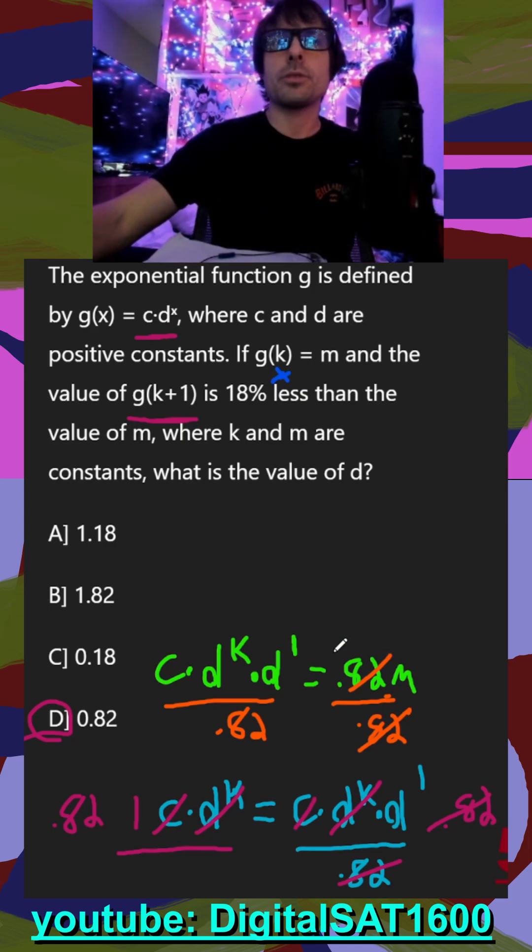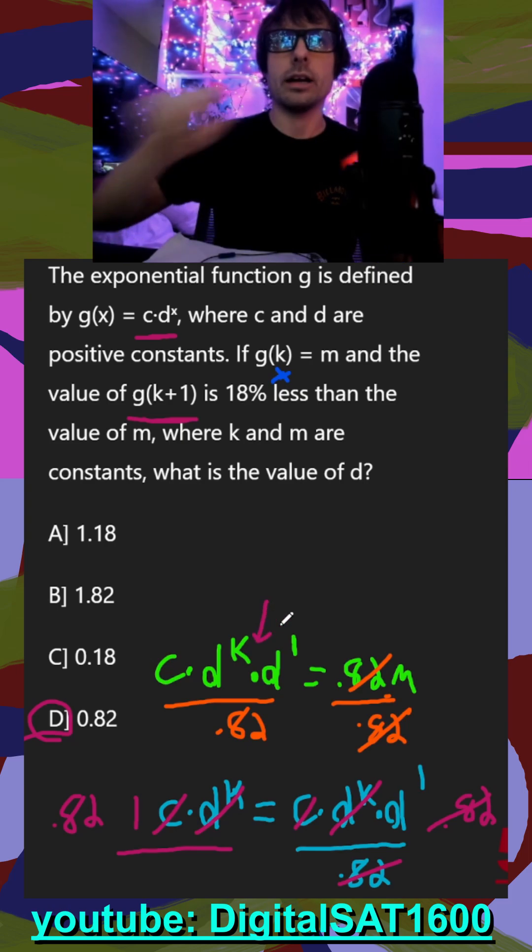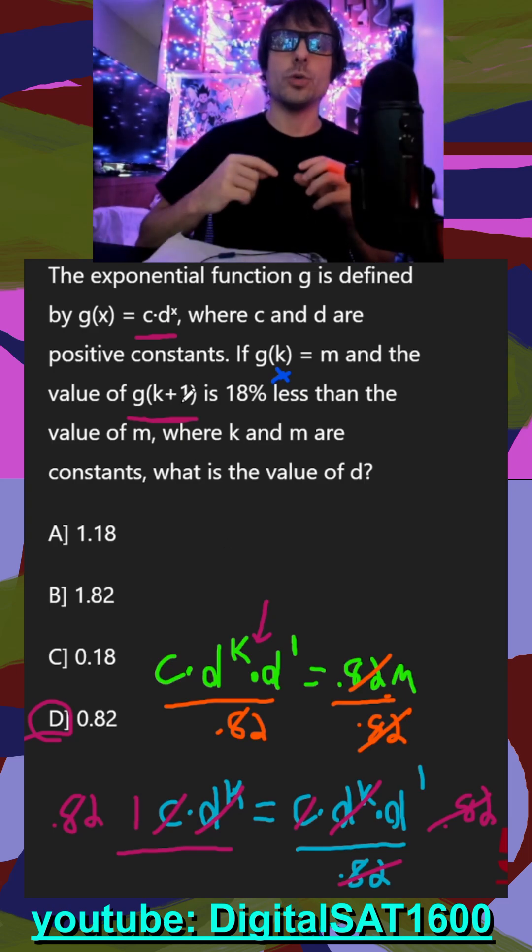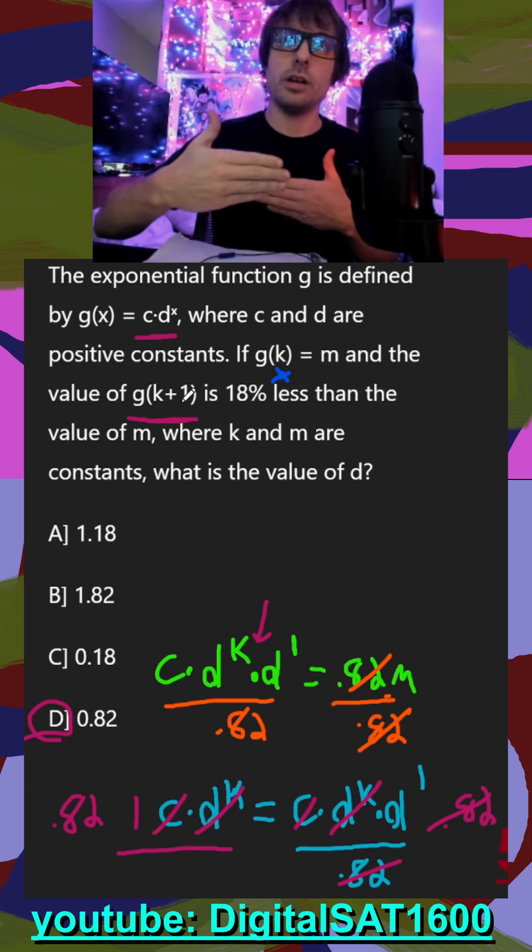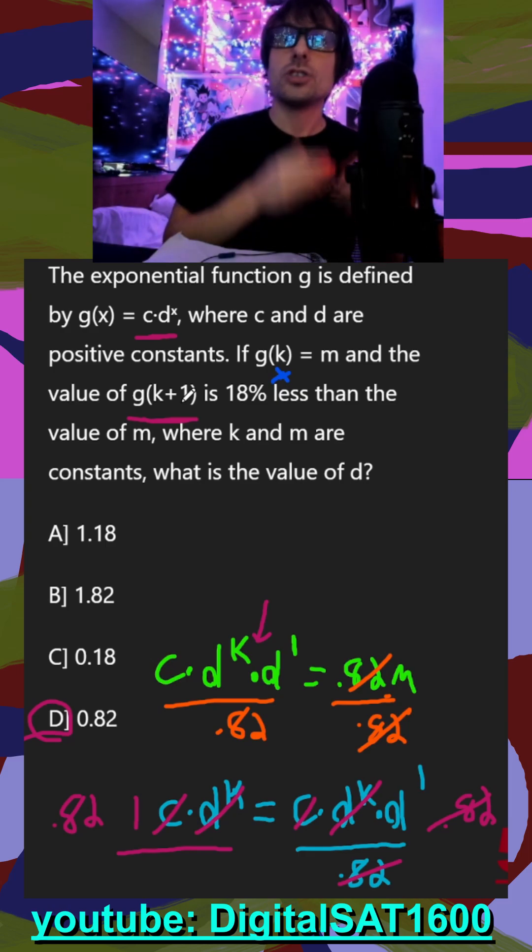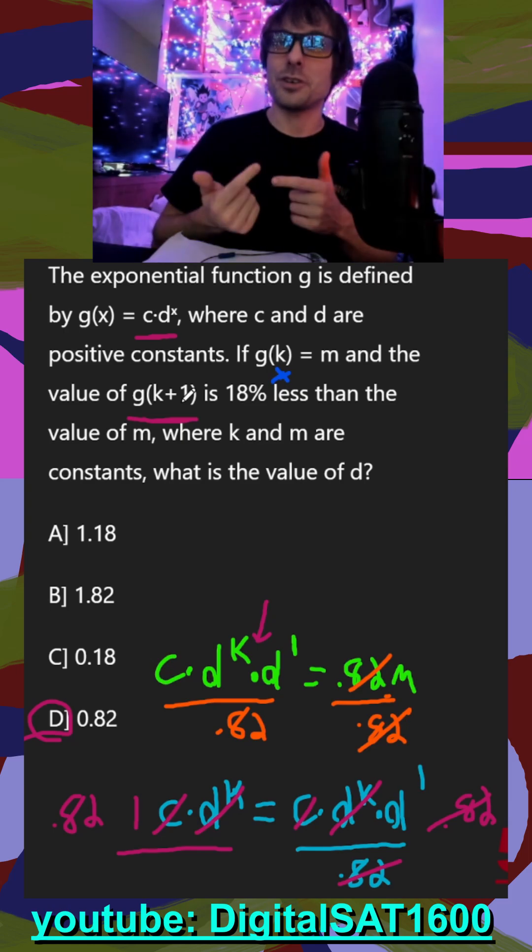all they're actually doing, remember the rule that we used right here, where it was k plus 1, it was d to the k, and then just an additional d to the 1. Well, that's what k plus 1 does. All it's doing is each plus 1 is adding an additional, or I guess multiplying an additional d. So k plus 2 would be d to the k times d to the 1st times d to the 1st, right?